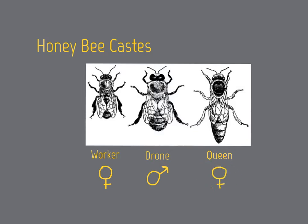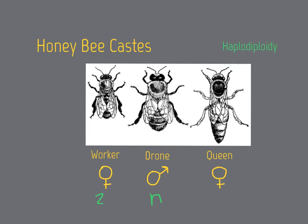The sex of bees is determined by haplodiploidy — in other words, males develop from unfertilized eggs and hence only have one set of chromosomes, while females develop from fertilized eggs and have two sets of chromosomes.